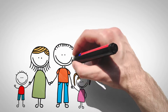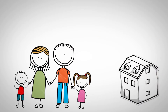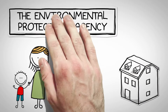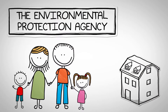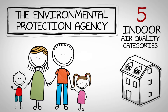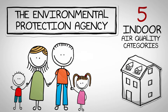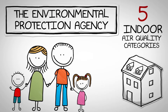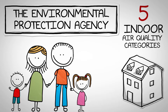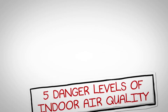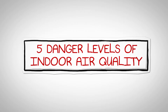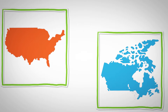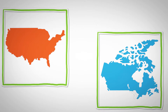When it comes to assessing a family's indoor living environment, the Environmental Protection Agency identified five indoor air quality categories of concern that all homeowners need to be educated about in their home. They are referred to as the five danger levels of indoor air quality. Indoor air quality is a major human health issue in the United States and Canada.